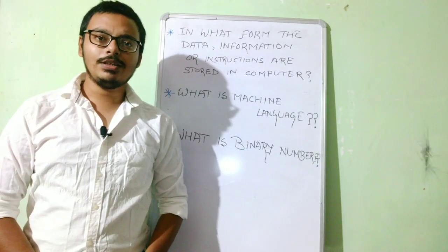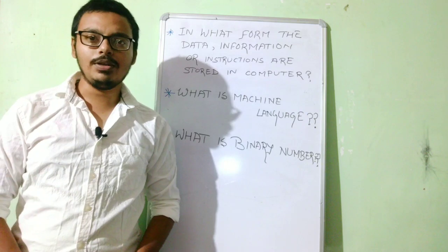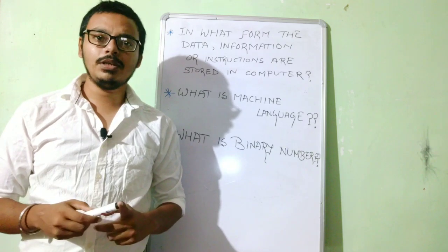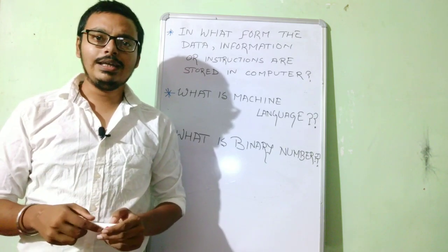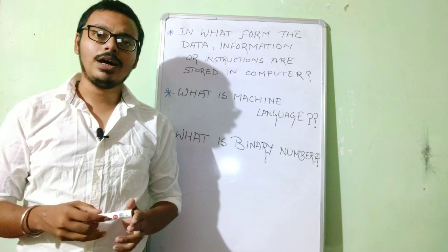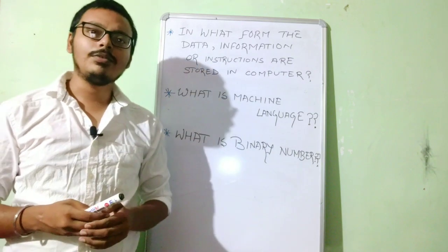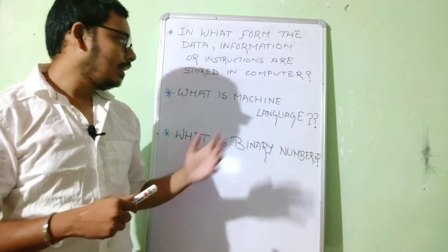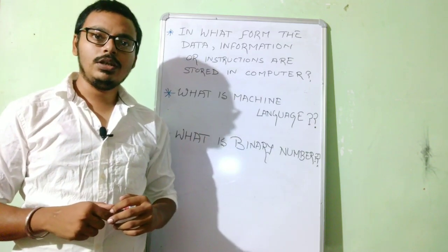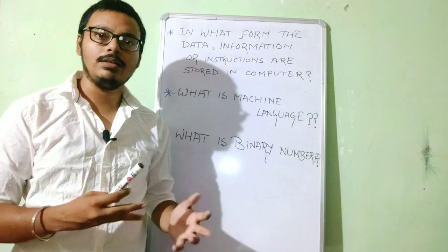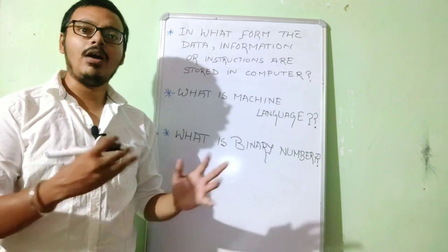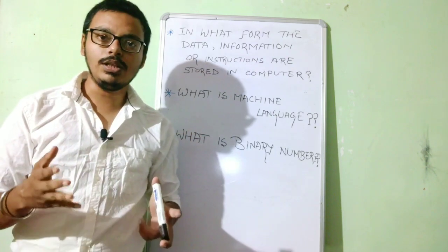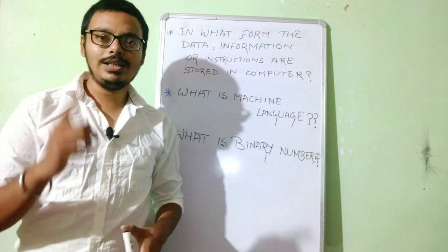Hello students. In our last class we discussed the memory units of computer — primary memory, secondary memory and their types. In this video we'll discuss how data, information and instructions are stored in a computer, in what form they are stored, and we'll discuss machine language and binary numbers. So let's begin.